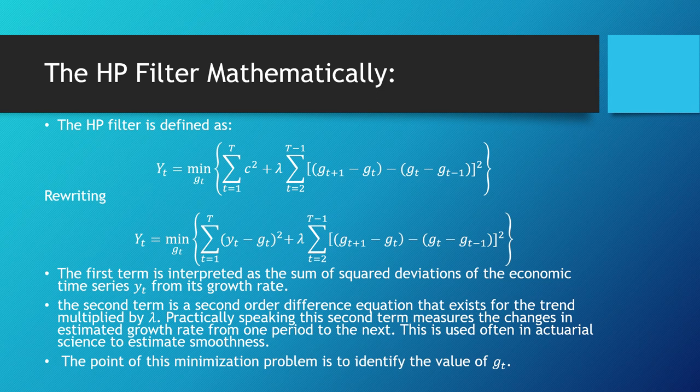So if we were to rewrite this, we can change this c component as being defined as the deviations from the growth rate. The first term is interpreted as the sum of square deviations of the economic time series from our growth rate. And the second term is a second-order difference equation which exists for the trend and is multiplied by a factor of lambda.